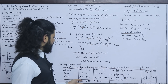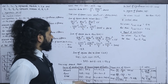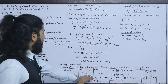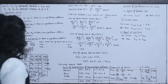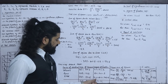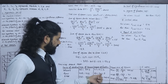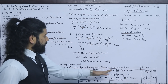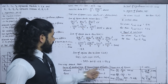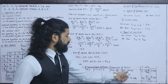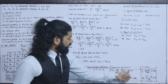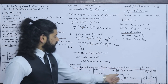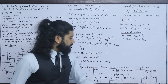Degrees of freedom: for columns c-1 = 3-1 = 2, for rows r-1 = 4-1 = 3, for error (c-1)(r-1) = 2×3 = 6. Mean sum of squares: MSC = SSC/2 = 1.75, MSR = SSR/3 = 1.3/3, MSE = 54.5/6 = 9.083.